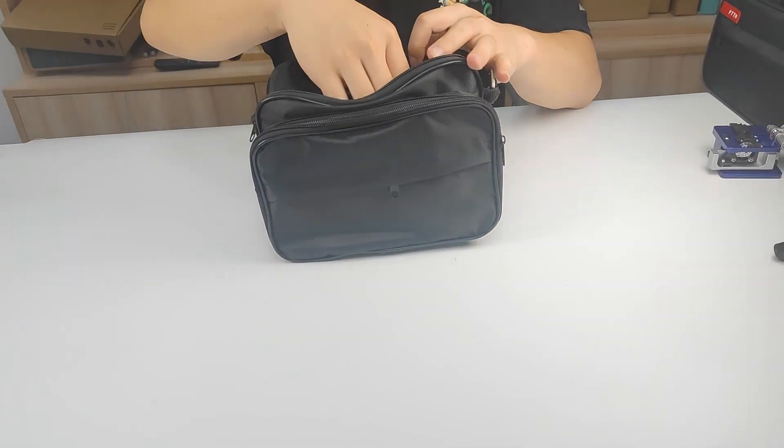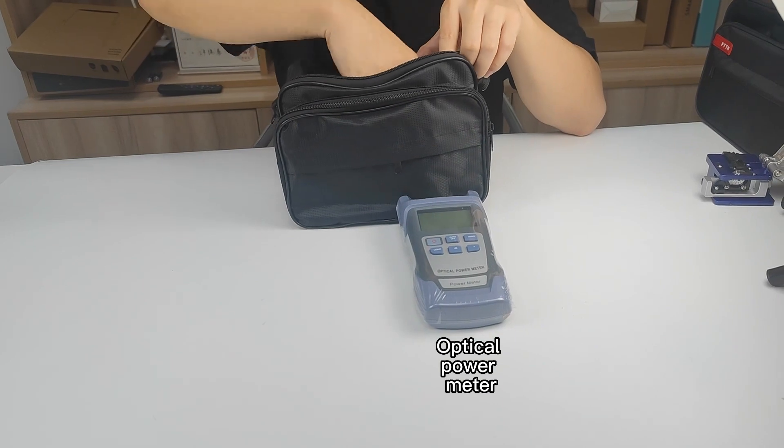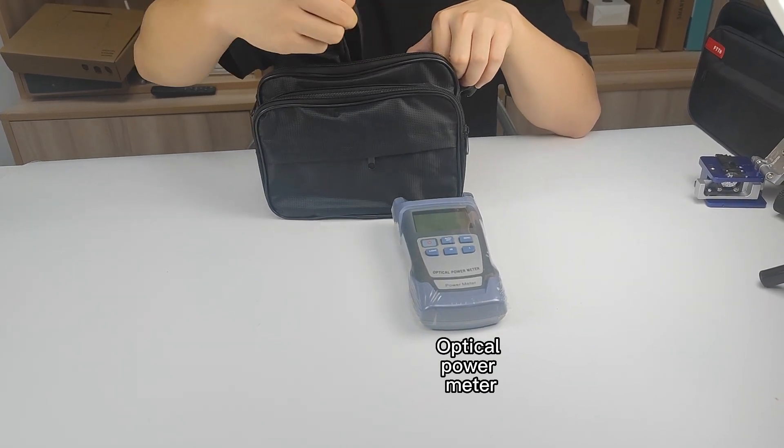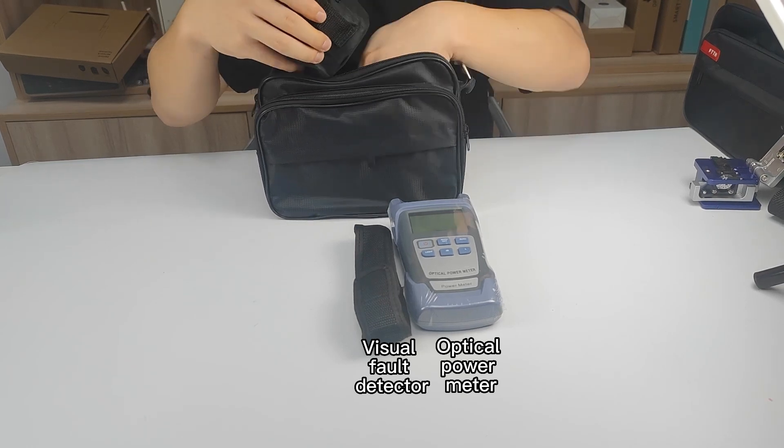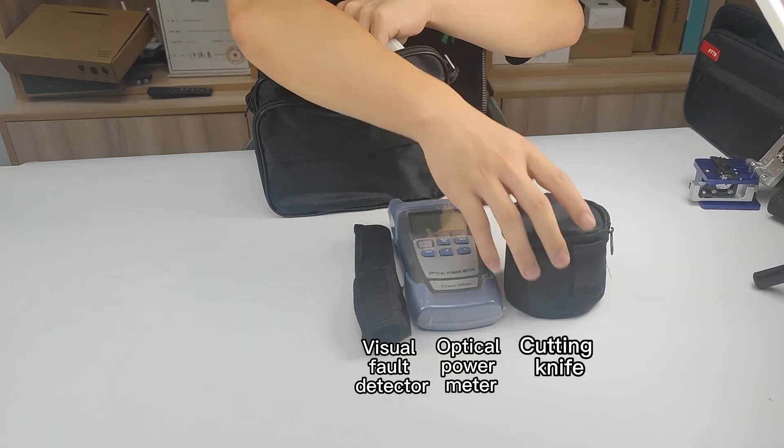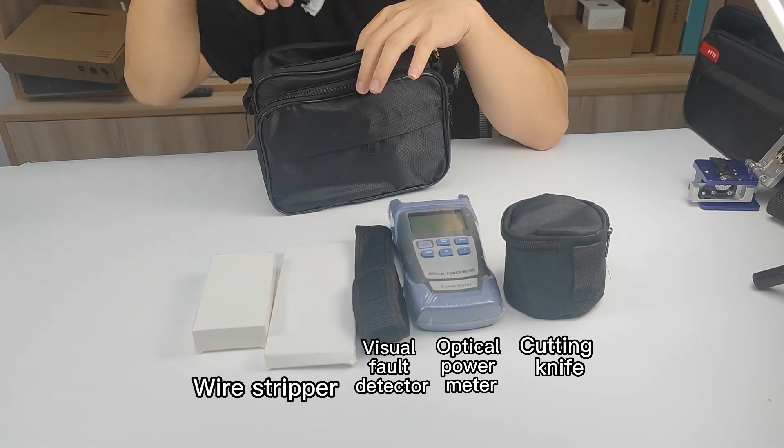This is a simple toolkit which includes the following tools: optical power meter, visual fault detector, cutting knife, wireless jumper, and alcohol bottle.